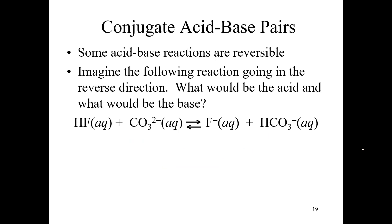Some acid-base reactions are reversible, and we know that eventually the system arrives at a state of equilibrium. Looking at the following equation from left to right, now imagine the reaction going in the reverse direction from right to left. In that direction, the fluoride ion is the one accepting a hydrogen to become HF, so that's the base, and the HCO3 minus ion — the bicarbonate ion — is donating that hydrogen. Going from right to left, the HCO3 minus ion would be the acid.